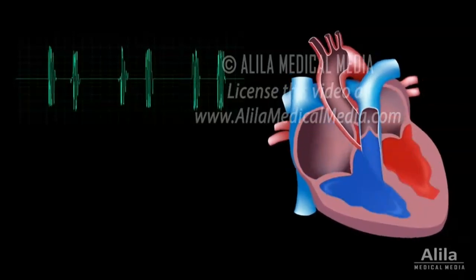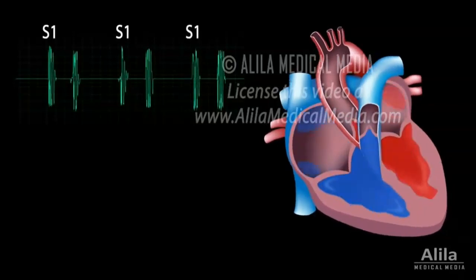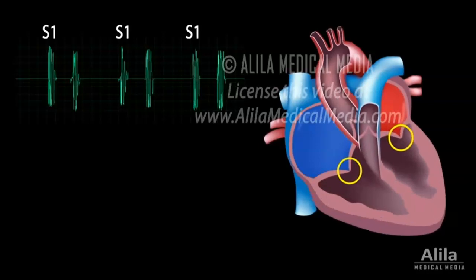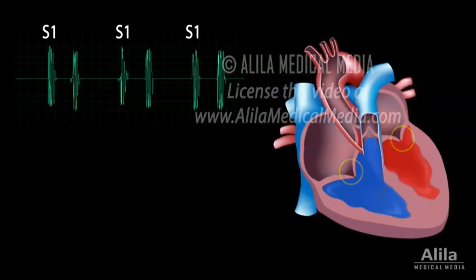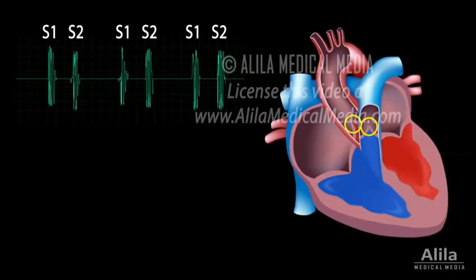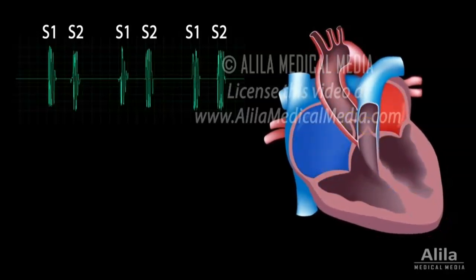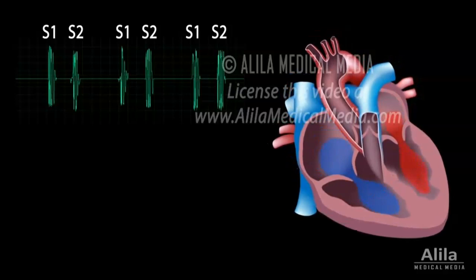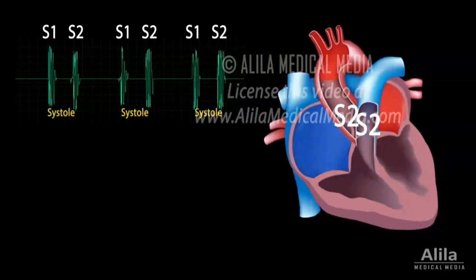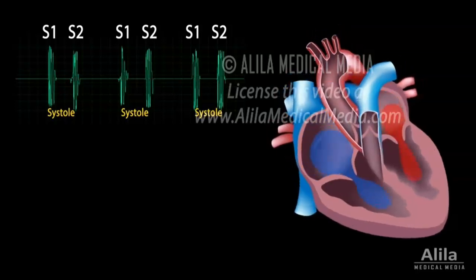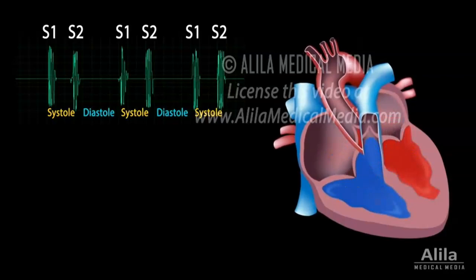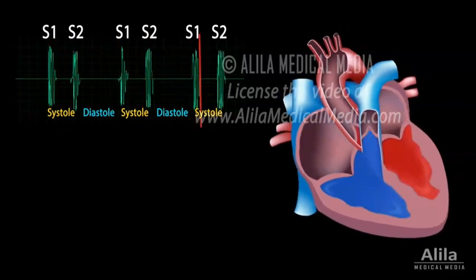The first heart sound, also known as S1, is caused by the closing of the AV valves after the atria have pumped blood into the ventricles. The second heart sound, dub, or S2, originates from the closing of the aortic and pulmonary valves right after the ventricles have ejected the blood. The time interval between S1 and S2 is when the ventricles contract, called systole. The interval between S2 and the next S1 is when the ventricles relax and are filled with blood, called diastole. Diastole is longer than systole, hence the lub-dub, lub-dub, lub-dub.